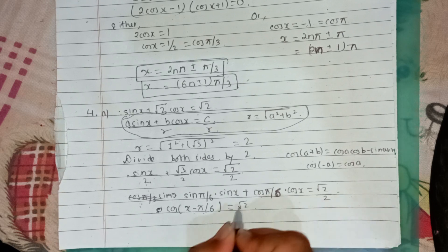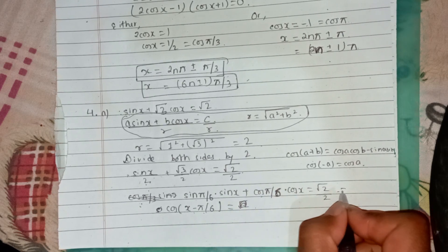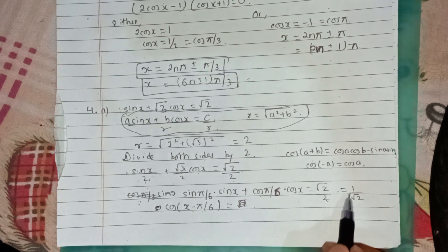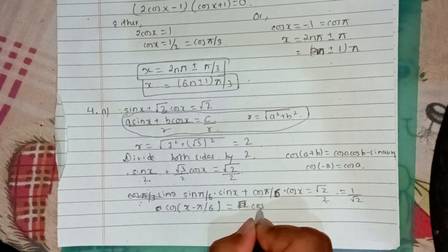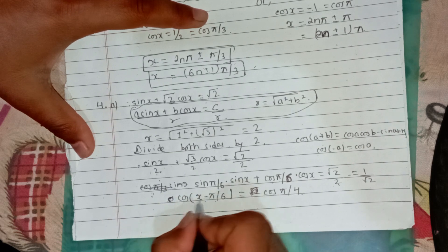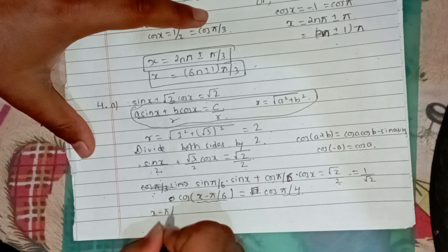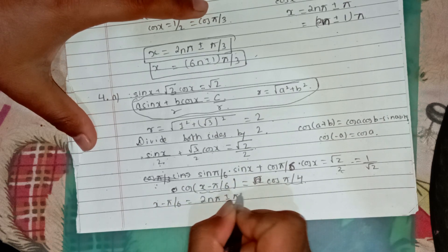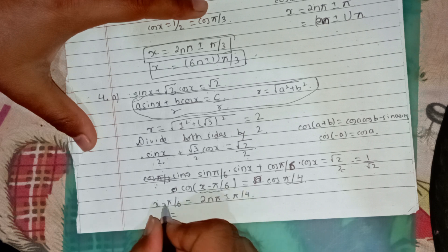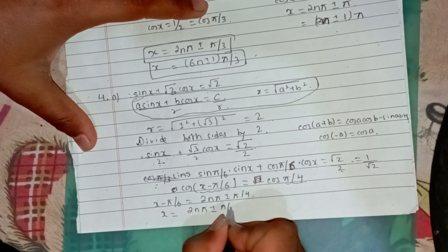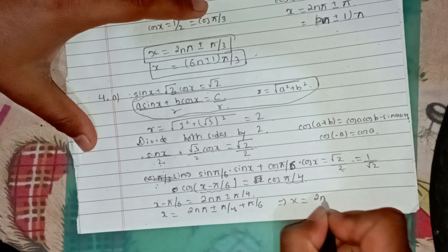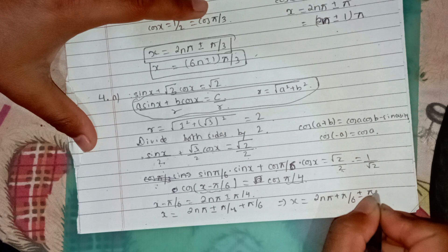We have root 2 divided by 2, which is 1 by root 2. So cos x minus pi by 6 equals 1 by root 2, which equals cos pi by 4. So we get x minus pi by 6 equals 2n pi plus minus pi by 4.